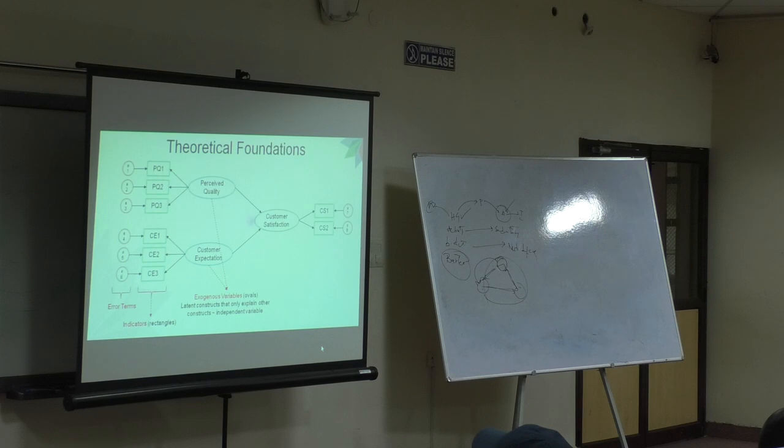Moving further. Both perceived quality and customer expectation are called exogenous variables. Exogenous variables because they try to explain other constructs. So if you see the arrows, the arrows will be only output. So that's why they are called exogenous variables. Like, you are independent.